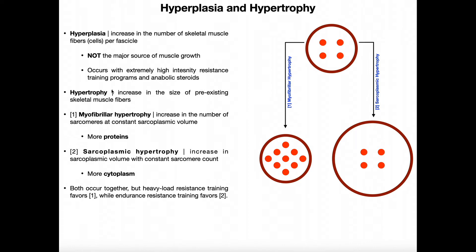However, there are two ways that muscles can hypertrophy. An interesting thing that will come up in one of the next videos is that this not only applies to skeletal muscle, but also to cardiac muscle and possibly some cardiac adaptations or pathologies. The two types of hypertrophy are myofibrillar hypertrophy and sarcoplasmic hypertrophy.